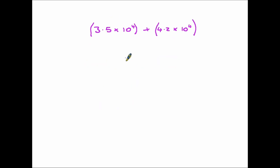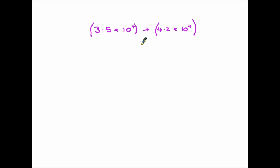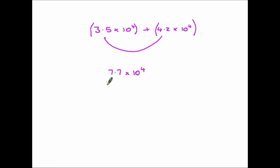Moving on to adding and subtracting — if anything this is actually more simple, because adding and subtracting is only possible if the powers of ten are the same. Here we have ten to the power four and ten to the power four. If they are different you cannot add them together. Once you've confirmed the powers match, all you have to do is add the front numbers: three point five plus four point two is seven point seven, so the answer is seven point seven times ten to the power four.